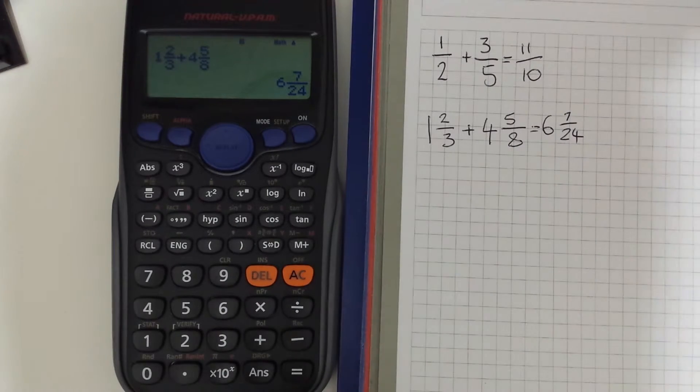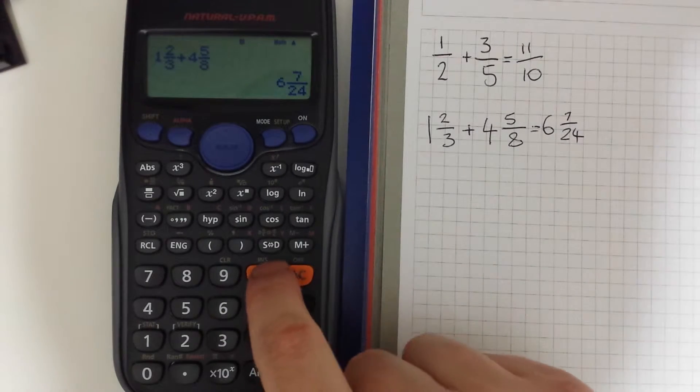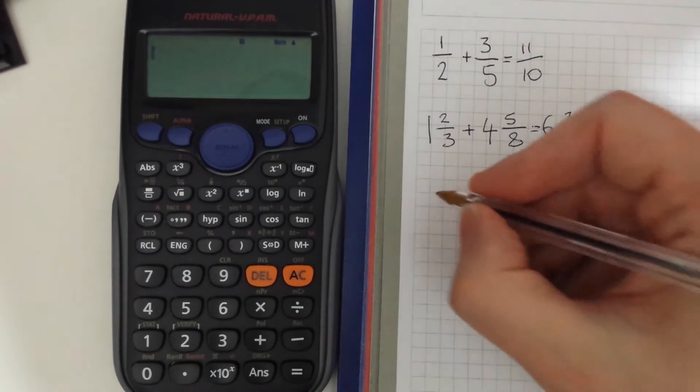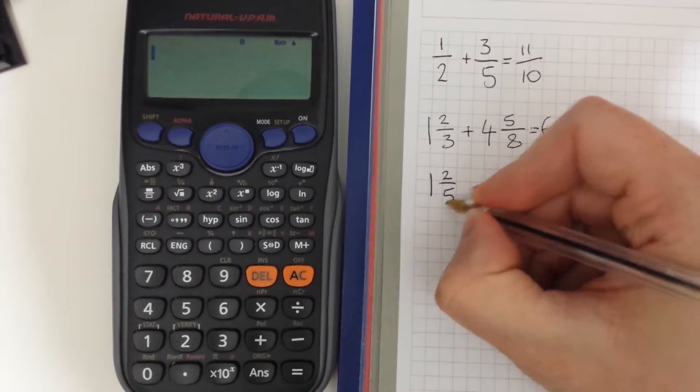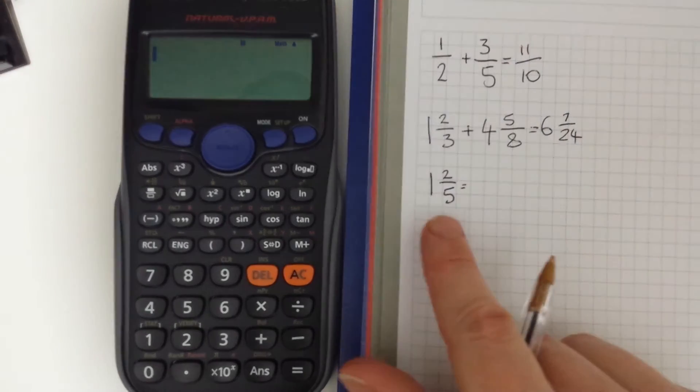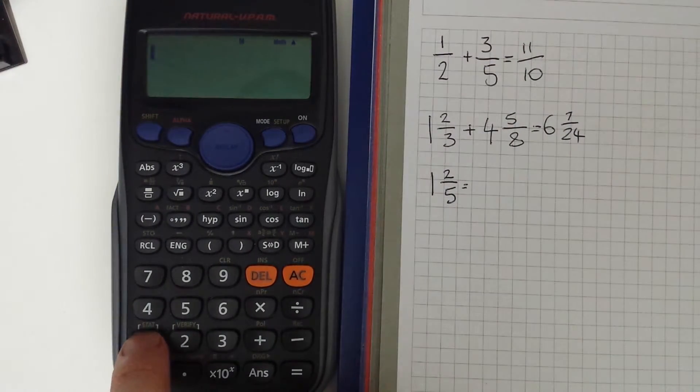So we can also just use that to convert between improper and mixed numbers. So if I write a mixed number we can convert that to an improper fraction.